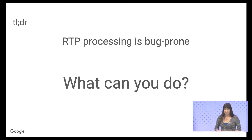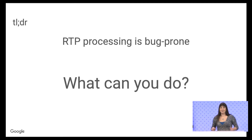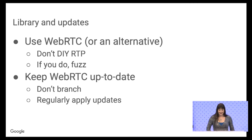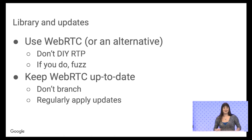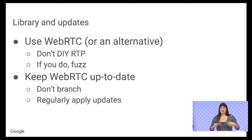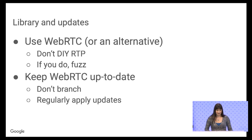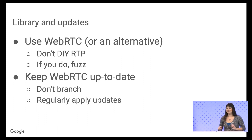Now that we know RTP is full of bugs, and I think all implementations will always have bugs in them, what can you do to reduce the risk to your application? What can you do to prevent your app from being used by totalitarian regimes to squash democracy? To start off, use WebRTC or an alternative like PJSIP. It sounds counterintuitive, but these are mature solutions that have some testing. If you try to do this yourself, you'll have even more bugs. So stick with a mature solution, and if you don't, make sure you implement libfuzzer and fuzz regularly.